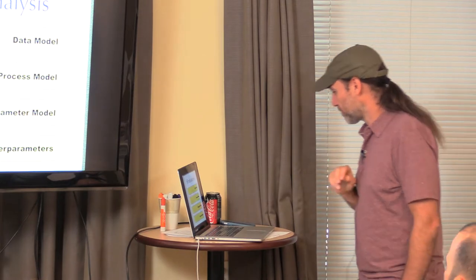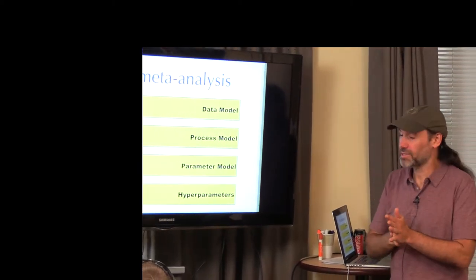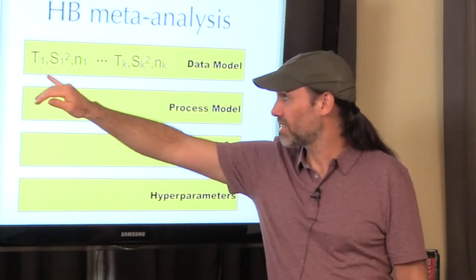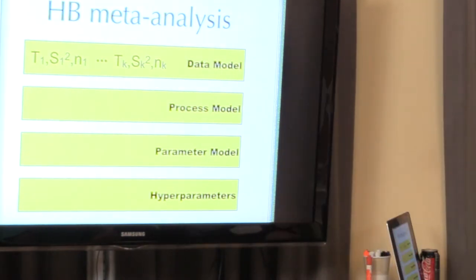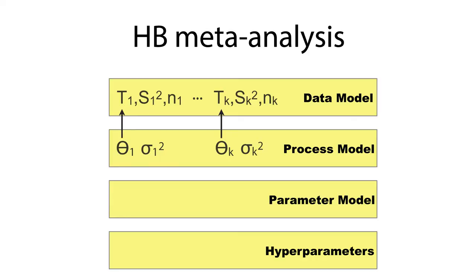I want to touch on one specific version of a meta-analytical model we've been using: meta-analysis in the context of a hierarchical Bayes model. What separates a meta-analytical model from any other model is that in the data model, you don't have raw observations — you have summary statistics like sample means, standard deviations, and sample sizes. We then write down a process model relating what we believe the latent true mean of that study was, given the observed sample mean and summary statistics.